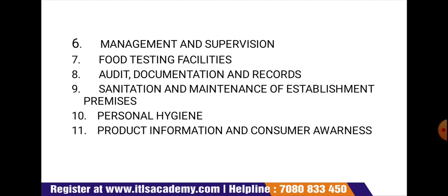Next is audit, documentation, and records. A periodic audit of the whole system according to the SOP shall be done to find out any fault or gap in the GMP and GHP system. Regarding sanitation and maintenance of establishment premises: a cleaning and sanitation program shall be drawn up, observed, and records thereof properly maintained. Records shall indicate the specific area to be cleaned, cleaning frequency, and cleaning procedures to be followed, including equipment and materials to be used. Equipment used in manufacturing shall be cleaned and sterilized after each use and at the end of the day.